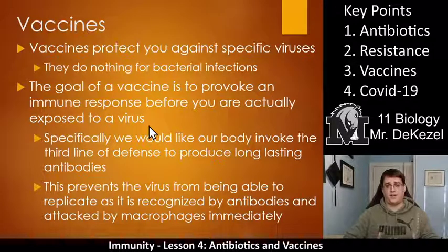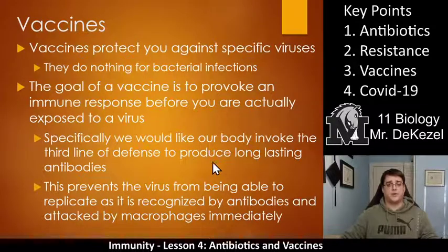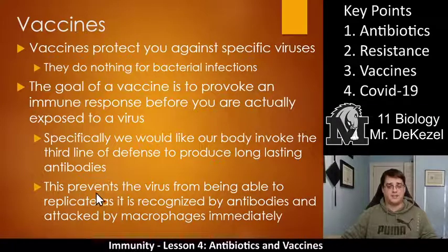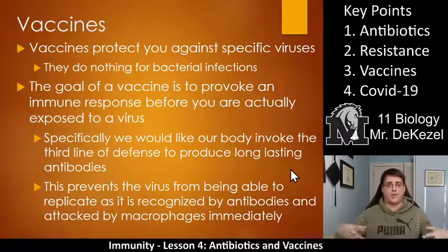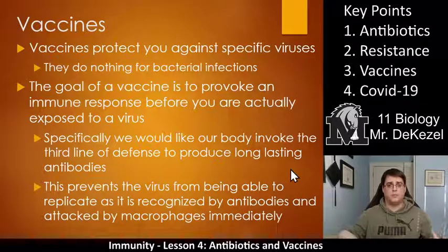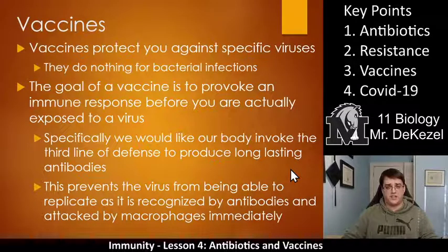Specifically, we want our body to invoke the third line of defense to produce long-lasting antibodies. This prevents the virus from being able to replicate, as it is recognized by antibodies and attacked by macrophages immediately. So if you've already got the antibodies in your system, they can immediately recognize the virus, immobilize it, and attack it, therefore causing much less severe illness or sometimes no illness at all.